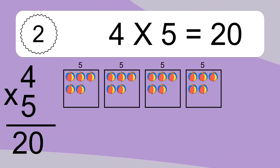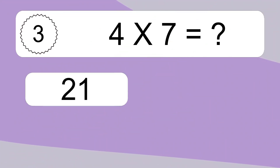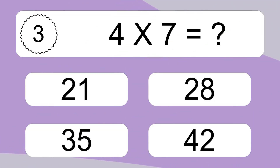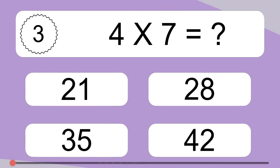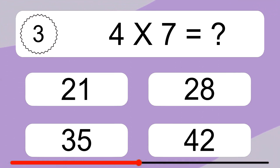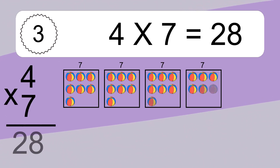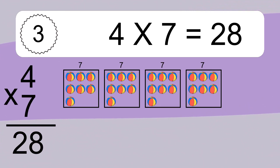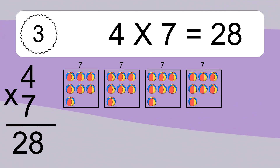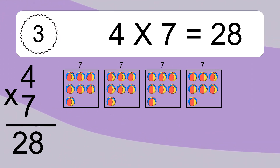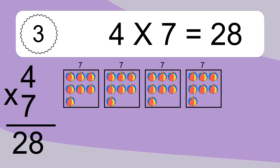4 times 7 equals what? We have 4 boxes, and each box has 7 colorful balls inside. If you count all the balls in all the boxes together, you will have 4 times 7 balls. This equals 28 balls.